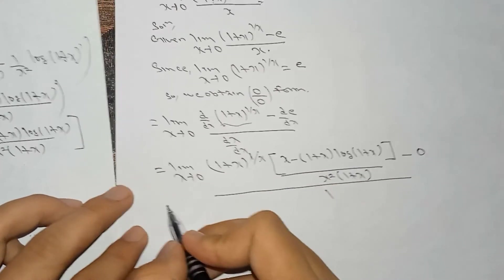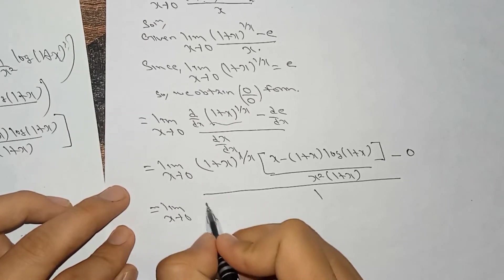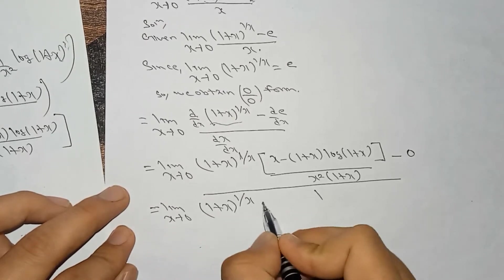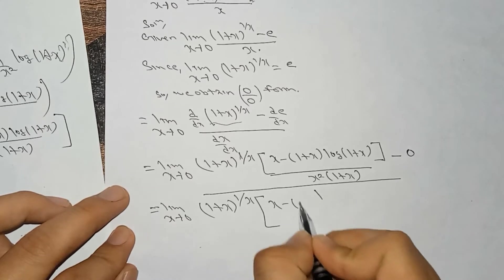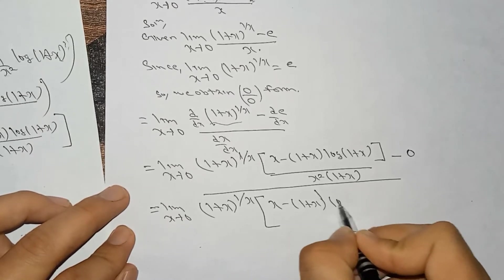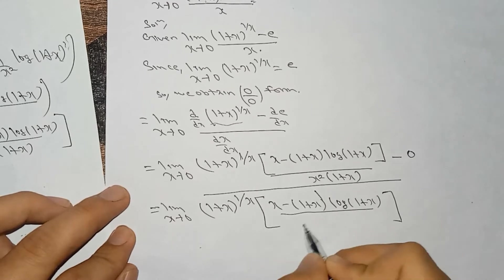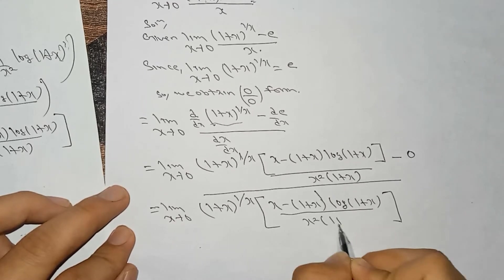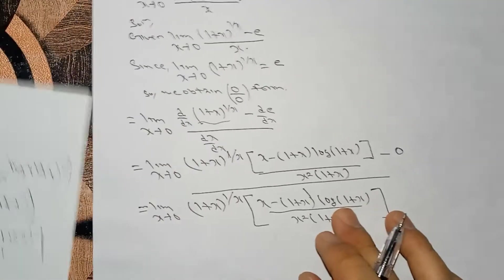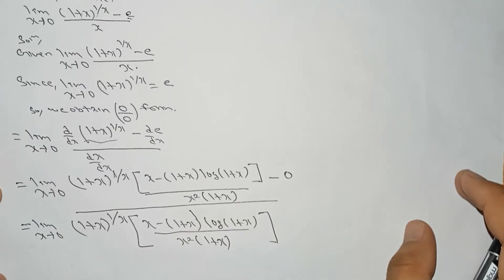So we can write this term as: limit x tends to 0, (1 plus x) to the power 1 by x, multiplied by [x minus (1 plus x) log(1 plus x)], divided by x squared (1 plus x). You can download the image of this solution from the website given in the description.